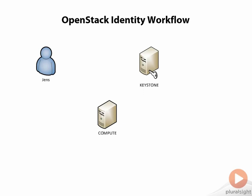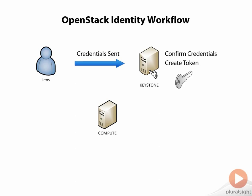The first thing that Jens has to do is send his credentials into the Keystone environment — this is the username and password combination which is going to authenticate him to see if he is who he says he is. Once the credentials are confirmed, Keystone creates a token, and that token is then passed back to Jens and carried out throughout the environment so that when he makes a request into the compute environment, the token is actually sent with the request.